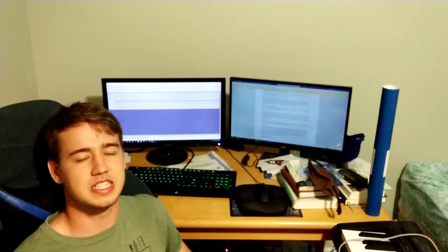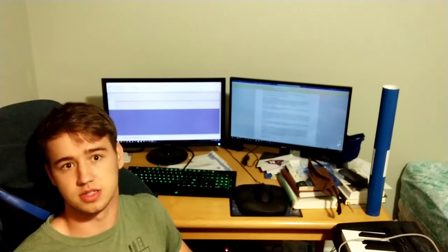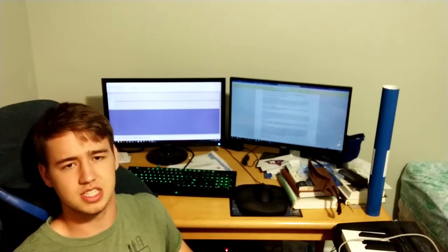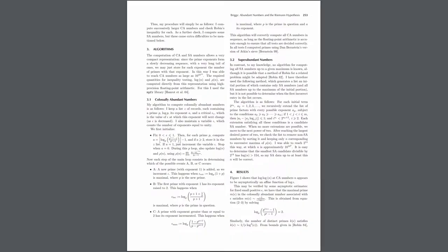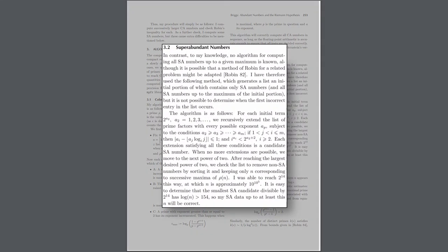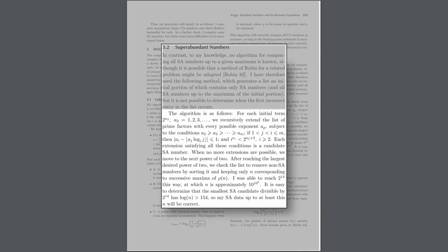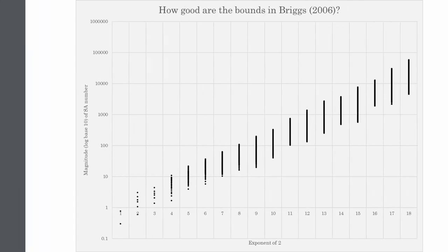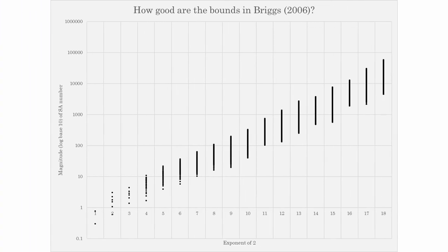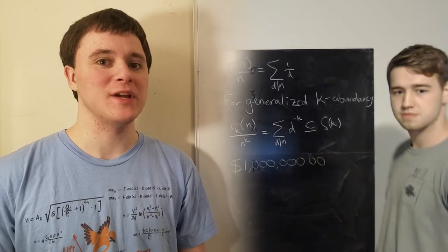The best method would be an algorithm that finds the superabundant numbers and nothing else. Unfortunately, if such an algorithm exists, no one has found it yet. In 2006, Keith Briggs published an article about abundant numbers, in which he explained that, to his knowledge, no algorithm for computing all superabundant numbers up to a given maximum is known. He provided his own method, which first narrows down the list of numbers to check to a smaller list of candidates, then runs through each of those. However, as we look for larger and larger superabundant numbers, this method checks far more numbers than it needs to. And this is where we came in.